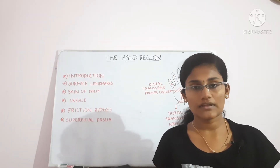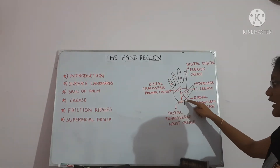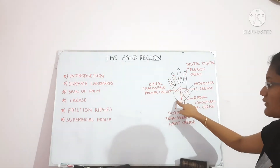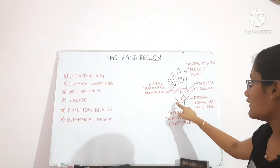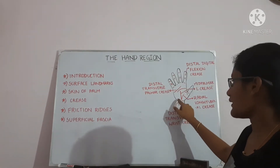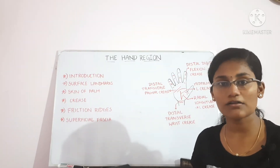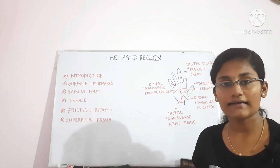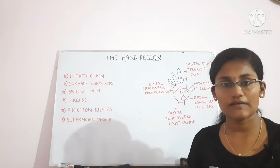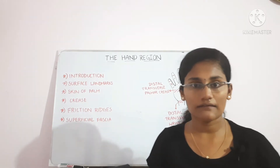The pisiform bone is present on the medial side, at the medial side of the distal transverse wrist crease, at the base of the hypothenar eminence. The hook of hamate is also present on the medial side, at a distance of one finger breadth from the pisiform bone. That covers all four surface landmarks of the hand.